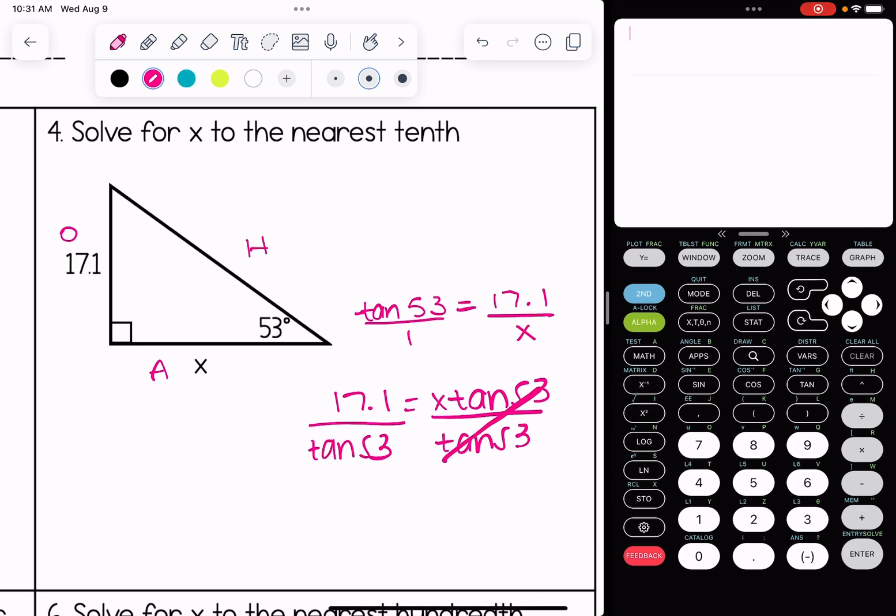I'm just going to go type that into my calculator and round accordingly. So it looks like we get x is 12.9 for number four.